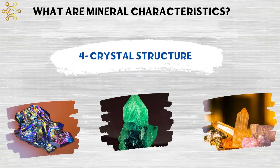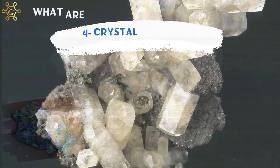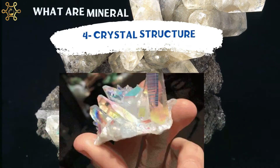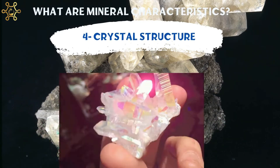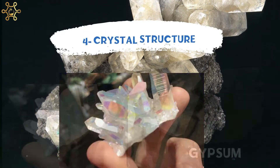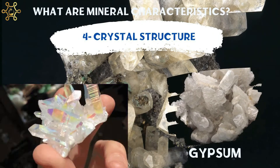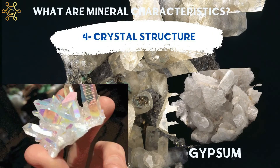Number 4: Crystal structure. The particles of a mineral line up in a pattern that repeats over and over again. The repeating pattern of a mineral's particles forms a solid called a crystal. The gypsum in the image has a crystal structure.